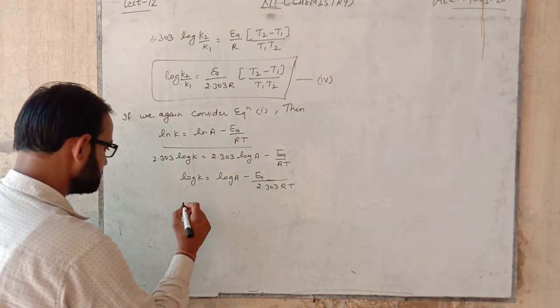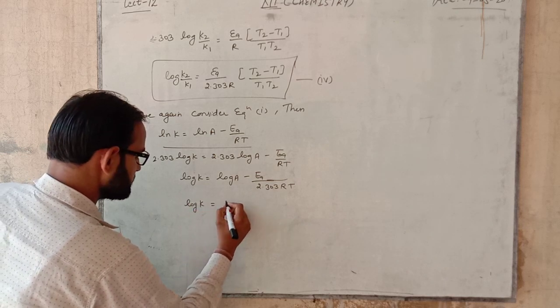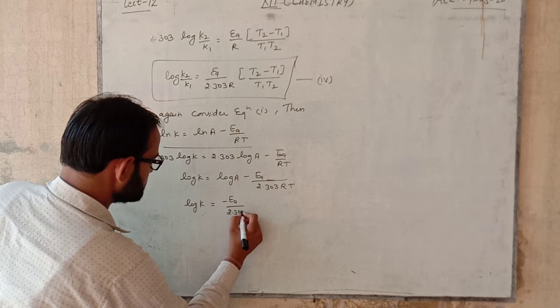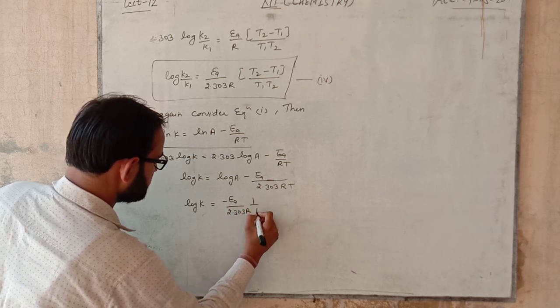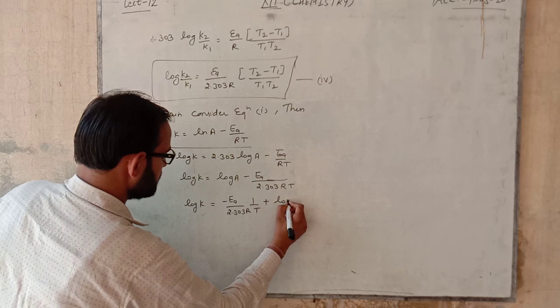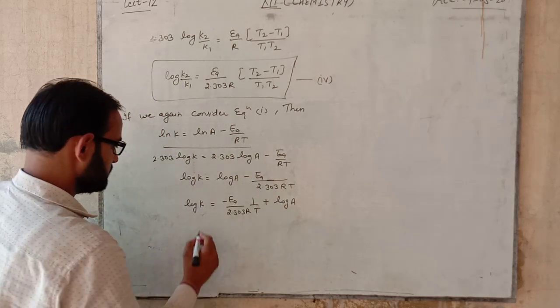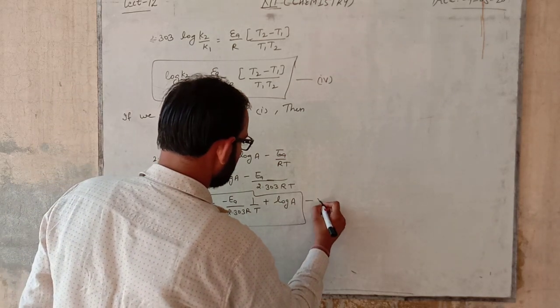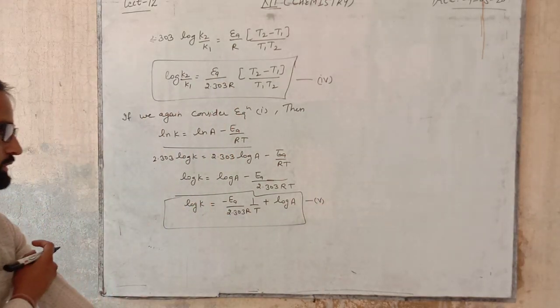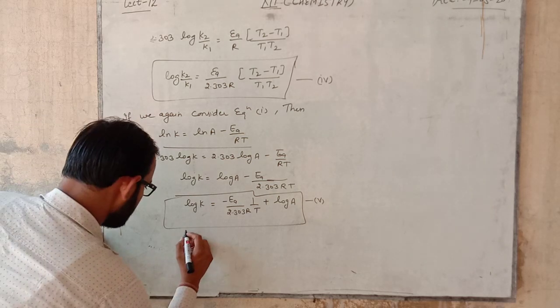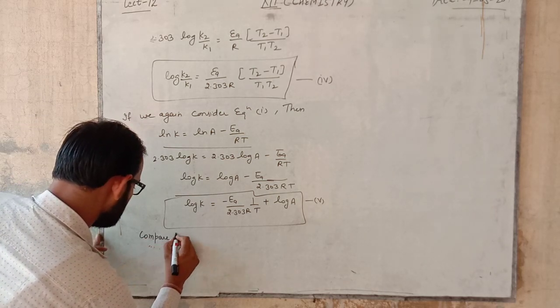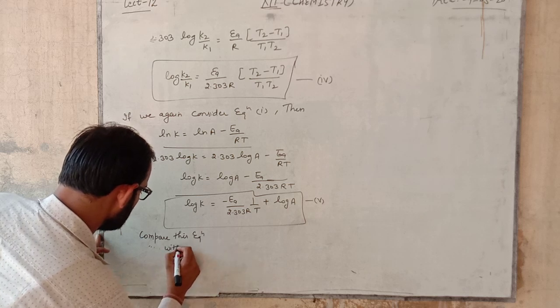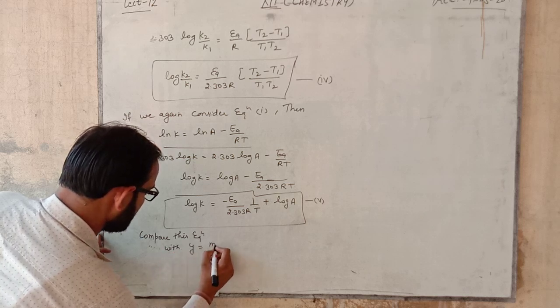It can be written in form of straight line equation: log k is equal to minus Ea upon 2.303 R times 1 by T plus log A. This is our equation number 5 for straight line equation. Compare this equation with y is equal to mx plus c.